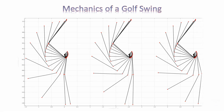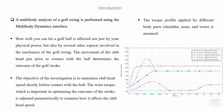We are back with another COMSOL Multiphysics tutorial with COMSOL examples. This one is about the mechanics of the golf swing. We are going to use the multi-body dynamics interface. Our objective is to maximize club head speed shortly before it comes into contact with the ball. The wrist torque, which is extremely important in optimizing the outcome of the stroke, is adjusted parametrically to examine how it affects the club head speed.